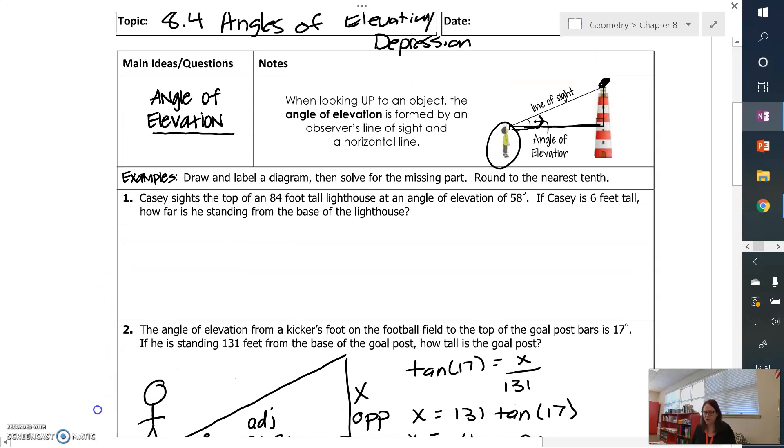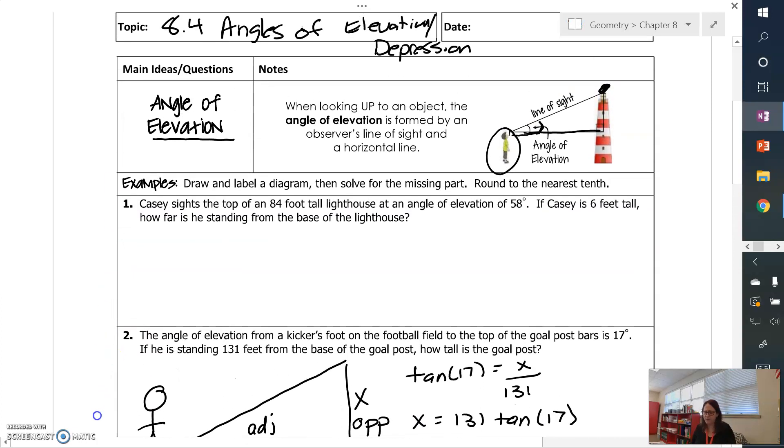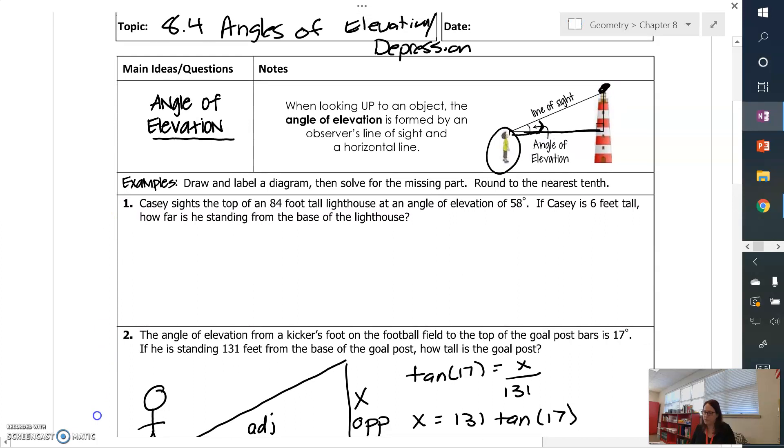Now the other one I want to show you is the first one on my notes. And the picture for this one is actually provided for us in our definition. It says Casey sights the top of an 84-foot-tall lighthouse. This is 84 feet. So this is Casey.